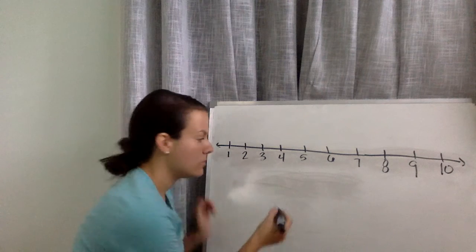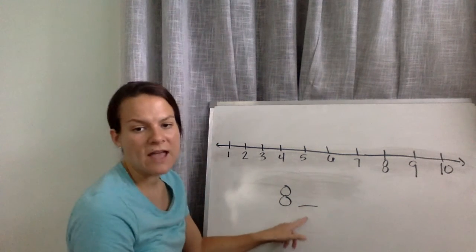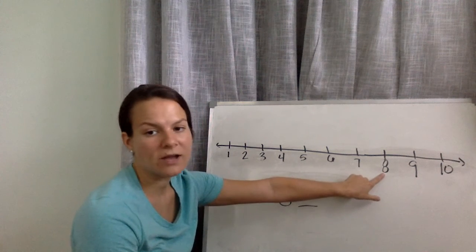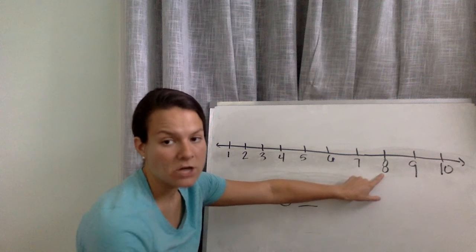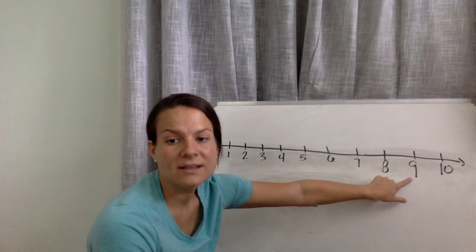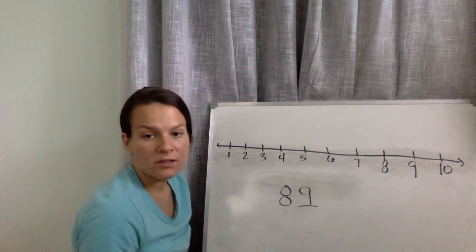Alright, let's pick the number 8. So we've got to find that number after 8. So we go to our number line, we find that number 8, and then we jump to the next number. We've got to find that bigger number. So we jump and land on what number? What number is that? 9. So 9 is one more than 8.